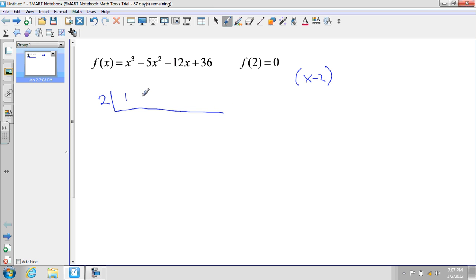That would be 1, -5, -12, and 36. So I'll draw my line here and I'll drop down my 1 to start off with.